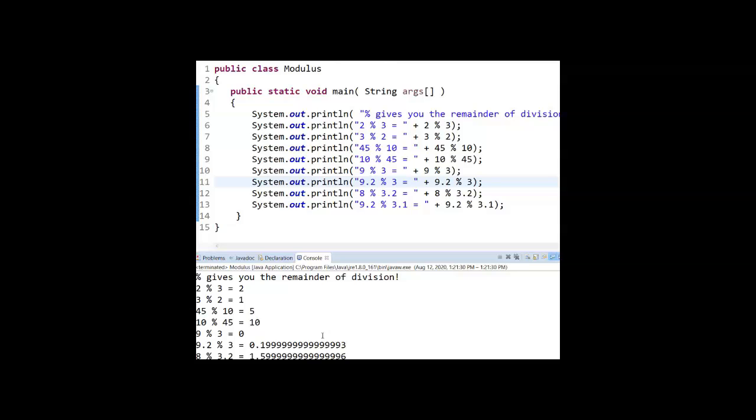3 mod 2, 2 goes into 3 one time, you're left with the remainder of 1. The mod that we have on here with the 45 mod 10 and the 10 mod 45, those are just some bigger numbers that you can see to try to make things a little clearer. So when you have 10 mod 45, 45 goes into 10 0 times, you're left with a remainder of 10.